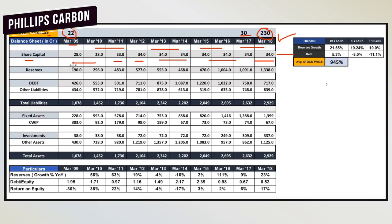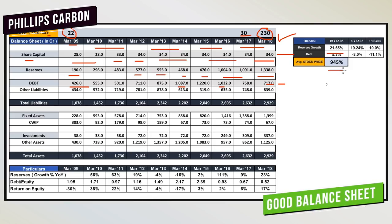Looking at reserves, in 2009 this company's reserve was only 190 crores, increasing up to 577 crores in 2012, then we saw a decline, followed by growth resuming from 2016 — a positive sign. Regarding debt, it was 426 crores in 2009 and went up to 1,000 crores in 2014. After that, debt declined, and in the recent period in 2018, this company's debt was 717 crores — also a positive stance. Overall, we see a 21% growth rate in reserves.